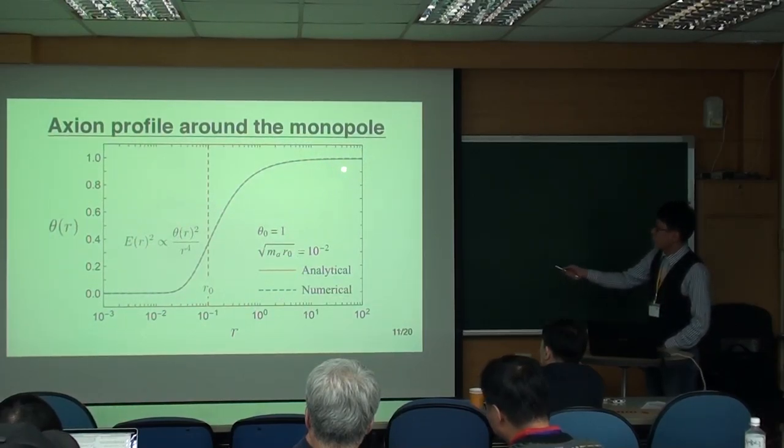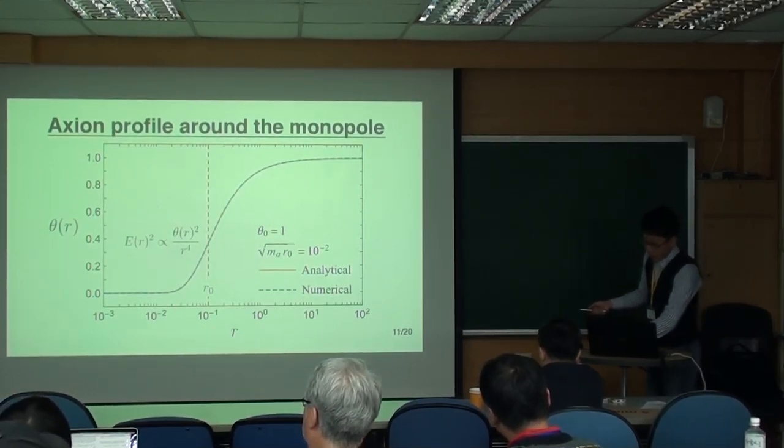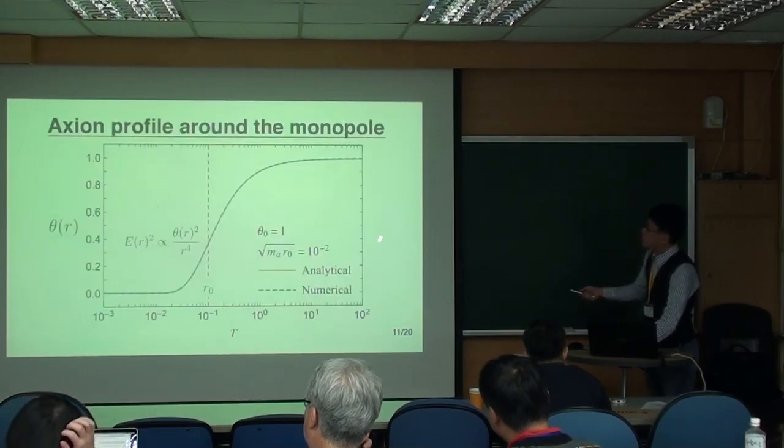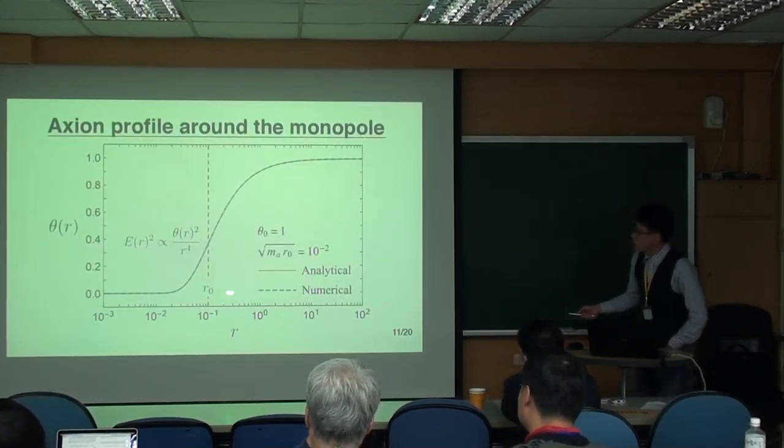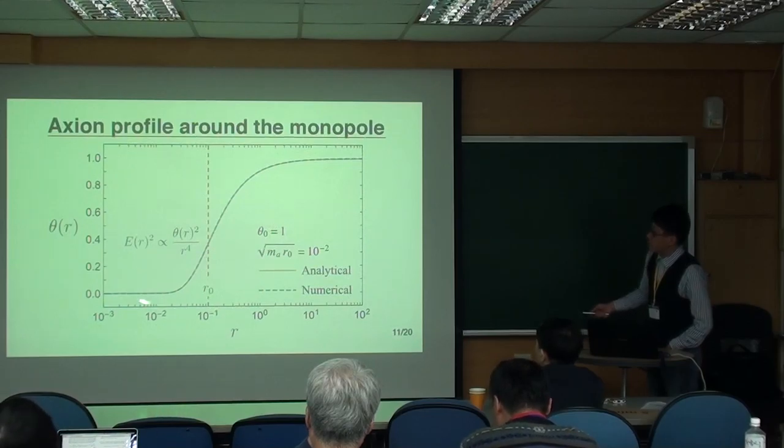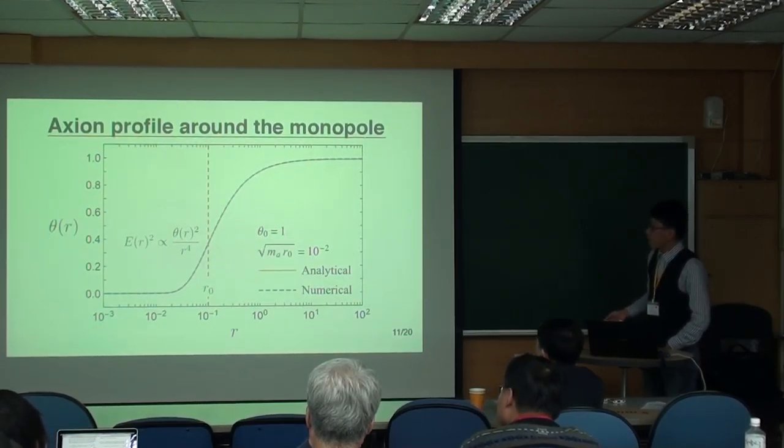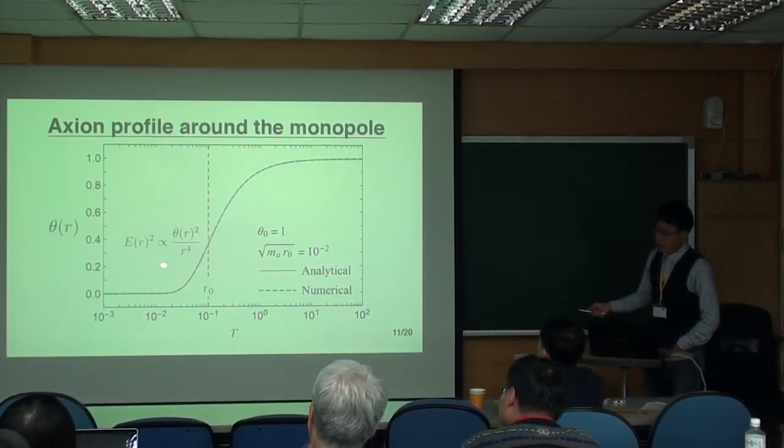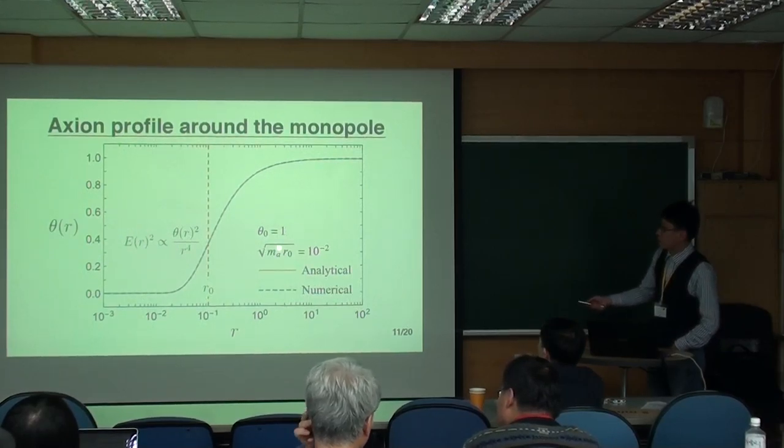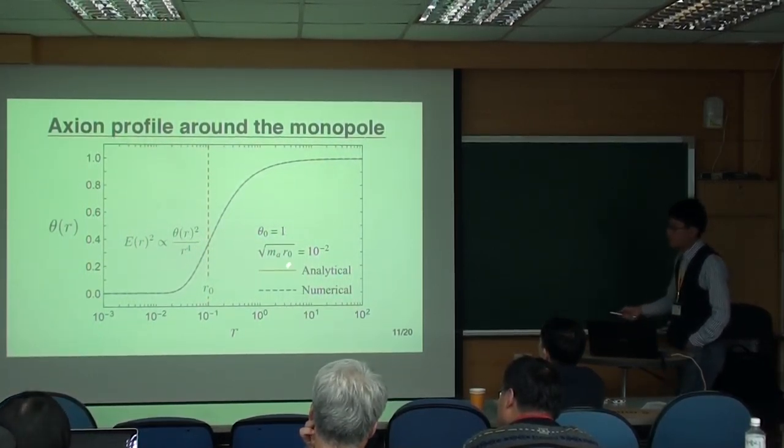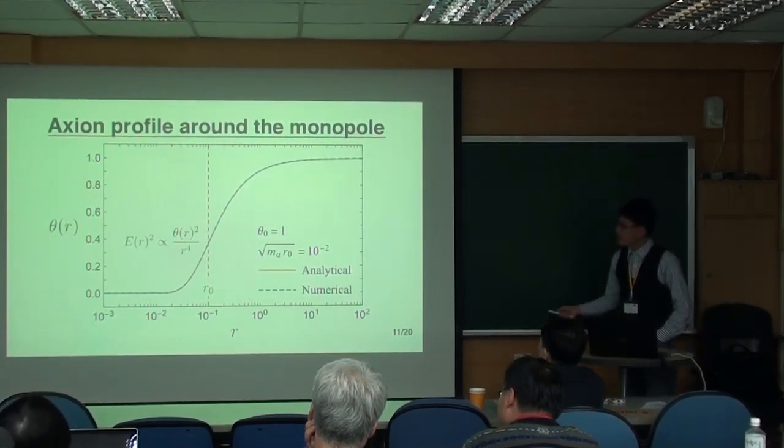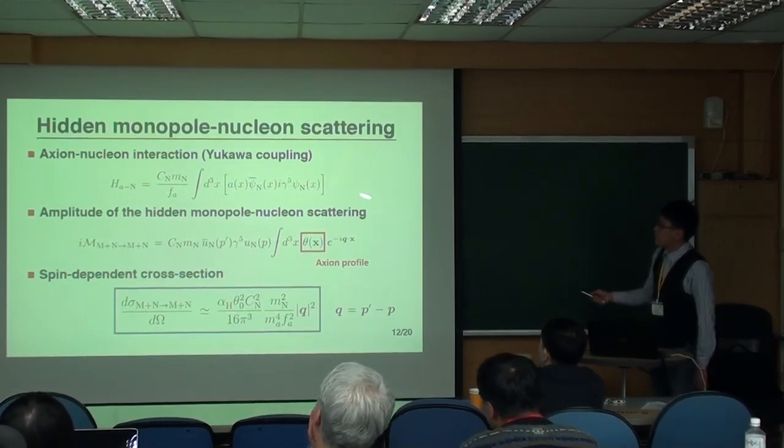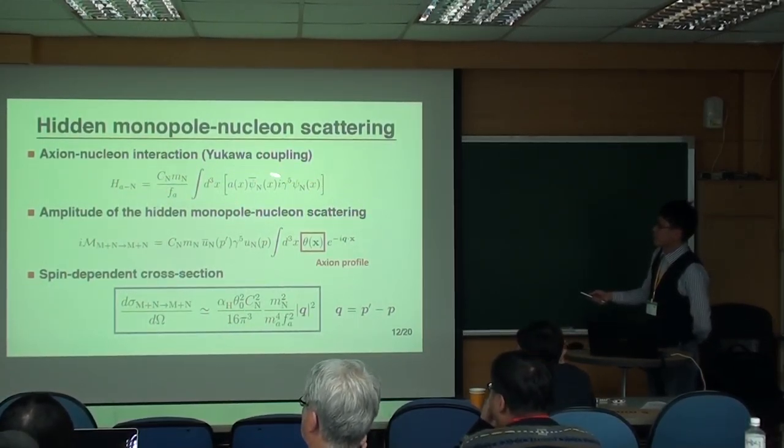And here, again, because we impose a boundary condition like this. So that's why we have this profile here. So the reason we impose this boundary condition is because if r goes to 0, then energy density will diverge. So that means we have to impose theta of r equals 0 boundary condition.